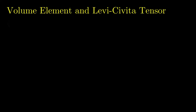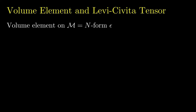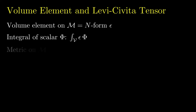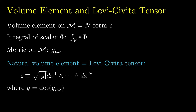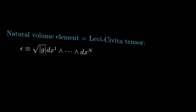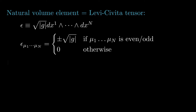Our next topic is volume elements and the Levi-Civita tensor. A volume element on an n-dimensional manifold is a non-vanishing n-form, which we'll call epsilon. The volume element can be used to define the volume integral of a scalar function phi by the integral of epsilon times phi. If the manifold has a metric g-mu-nu, the natural volume element is the Levi-Civita tensor defined by epsilon equals square root of absolute value of g times the wedge products of dx1 through dxn. Here, g is the determinant of the metric and we assume the coordinates are positively oriented. The components are plus or minus the square root of |g|, where the plus sign applies if mu1 through mu-n is an even permutation of 1 through n, the minus sign for an odd permutation, and 0 if the indices are not a permutation.